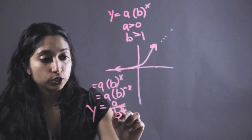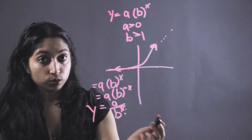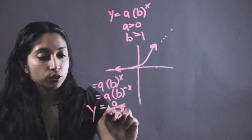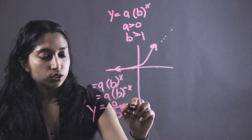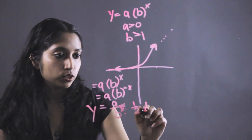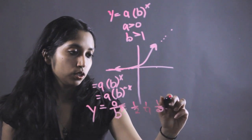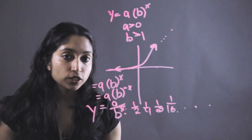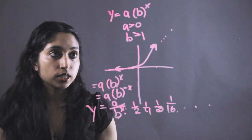For instance, say we had the number 2. 2 to the 1 is 2. 2 squared is 4. 2 cubed is 8. This number is going to keep growing and growing and growing. And so it's going to go from something like 1 half to 1 fourth to 1 eighth to 1 sixteenth. And it's going to keep going and getting smaller and smaller and smaller until eventually it approaches 0.